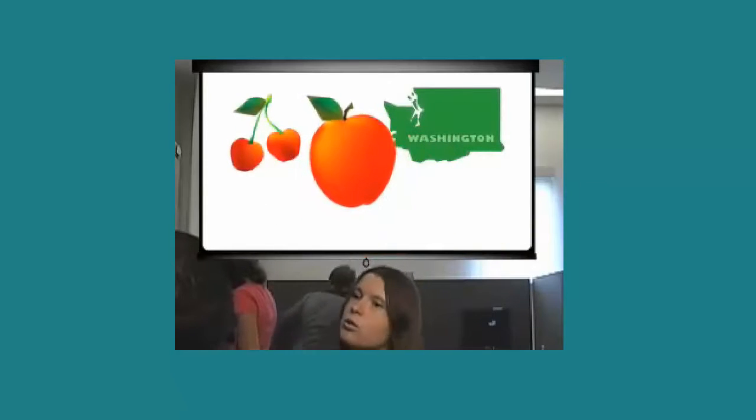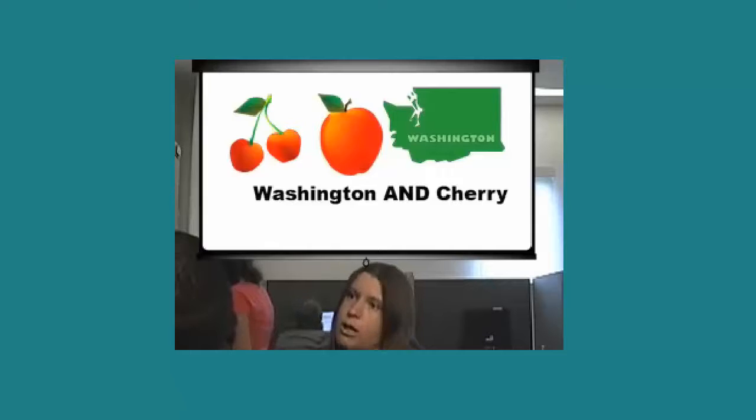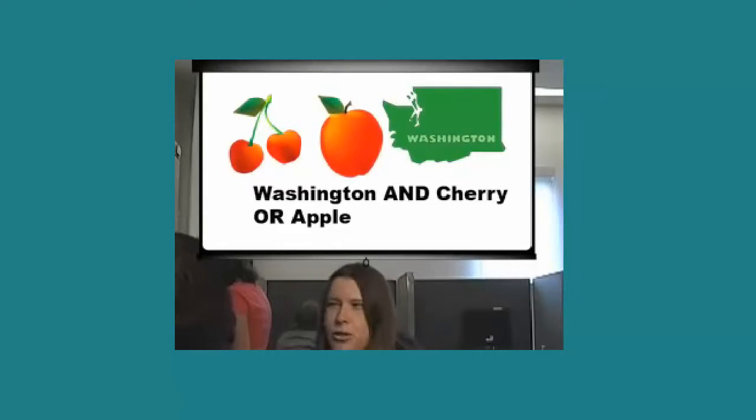There's even another Boolean operator, OR, which you could use. Say, for instance, you weren't just looking at the cherry industry in Washington, you were looking at the apple industry as well. Then you can do Washington and cherry or apple. OR is pretty much used when you have two like words or when you have very similar topics.